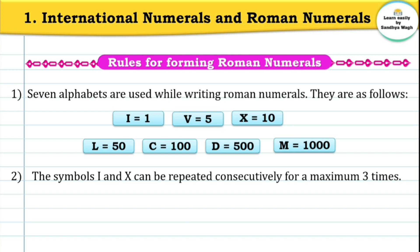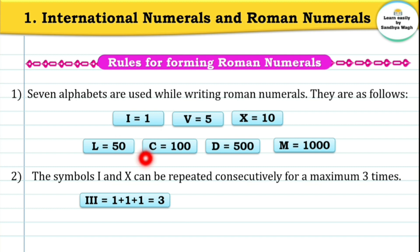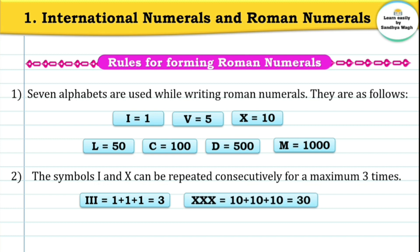Rule number 2: the symbols I and X can be repeated consecutively for a maximum of 3 times. 'Consecutively' means one after another. So symbol I can be used 3 times — I, I, I — meaning 1 plus 1 plus 1 equals 3. We cannot use I a 4th time because the maximum is 3 times. This applies to both symbol I and symbol X.